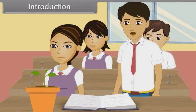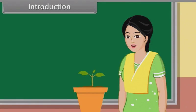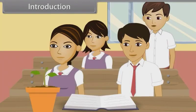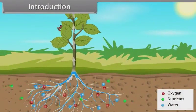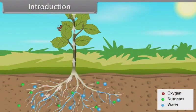Increase in the size of the cell and elongation in them signifies the growth of plant. Very good, Suresh. Can we measure the growth of plants? Good question, Rahul. Yes, we can. The growth of a plant can be measured by considering various factors such as nutrients availability, water availability, oxygen, etc.